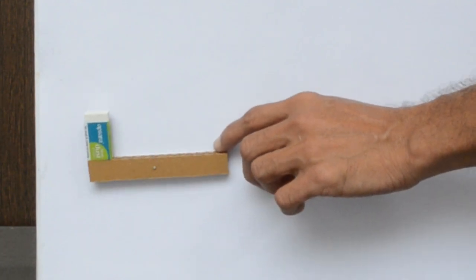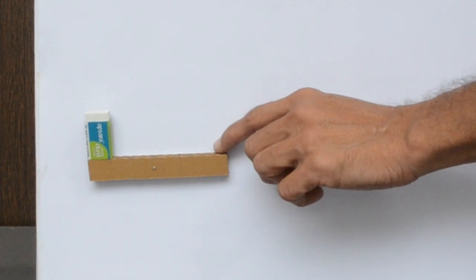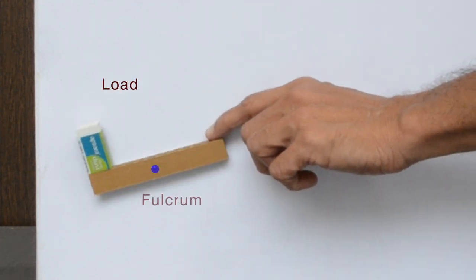This is also called a lever, class 1 lever. Eraser is our load and this point is fulcrum.